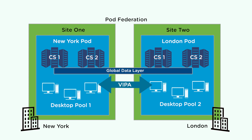Now let's look at what happens when the use home site policy isn't enabled for a global entitlement. In this example, an entitled user named Jane lives and works in London, but she's traveling and is connected to a connection server instance in New York. Because Jane is connected to the New York site and the use home site policy is not enabled, she receives a desktop from the New York site instead of from the London site.